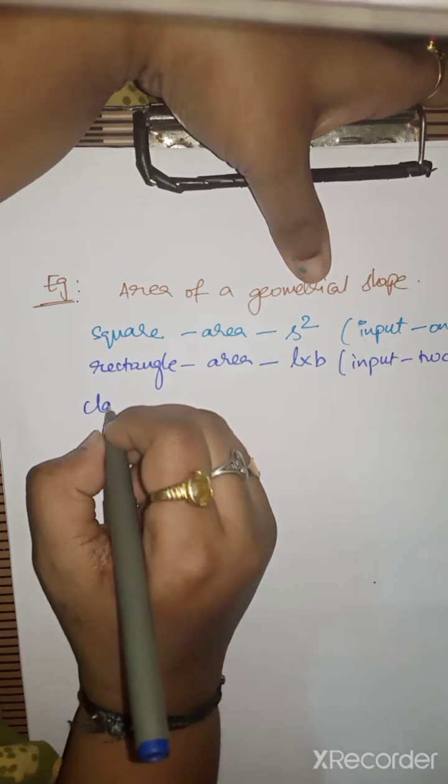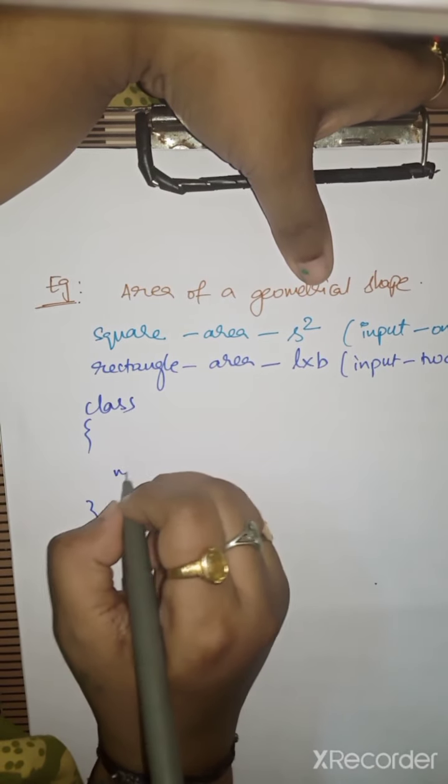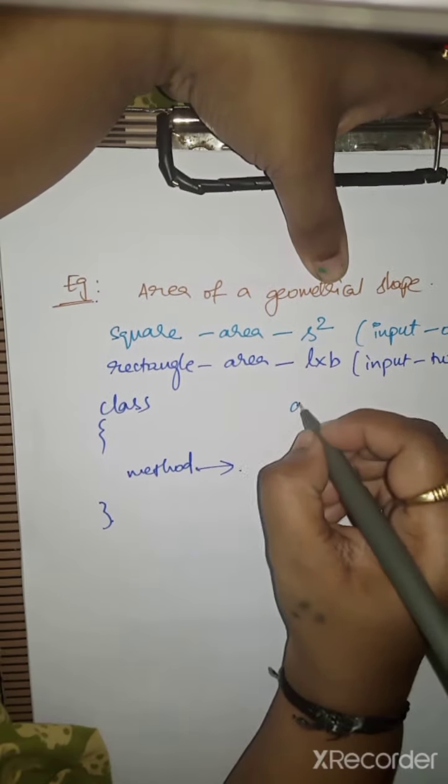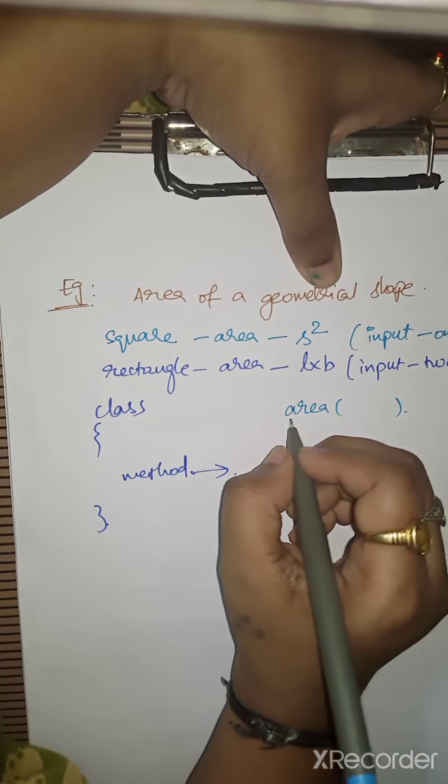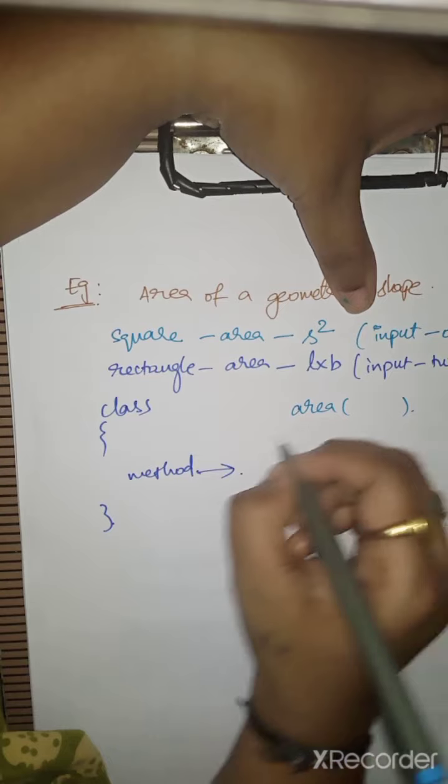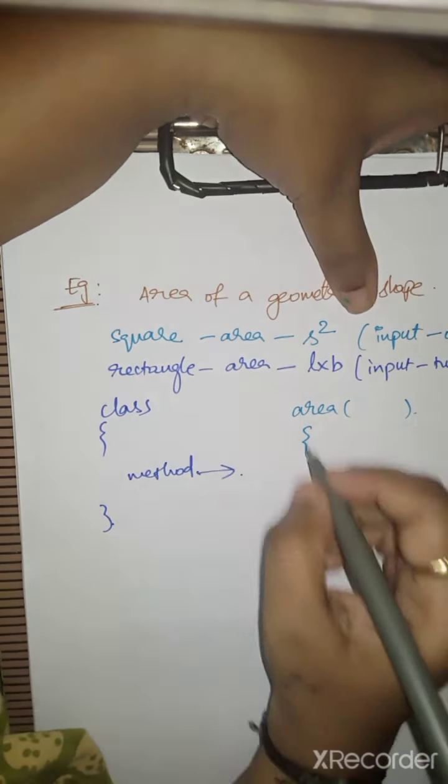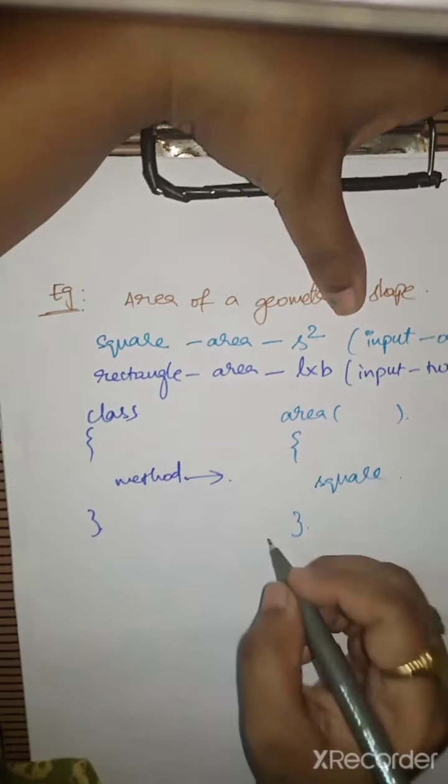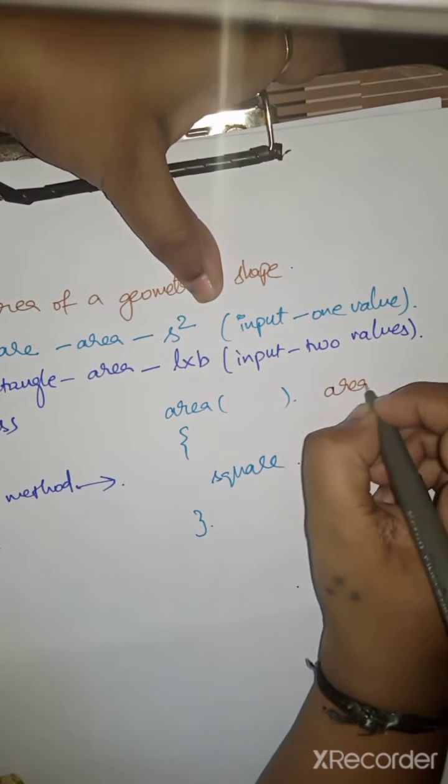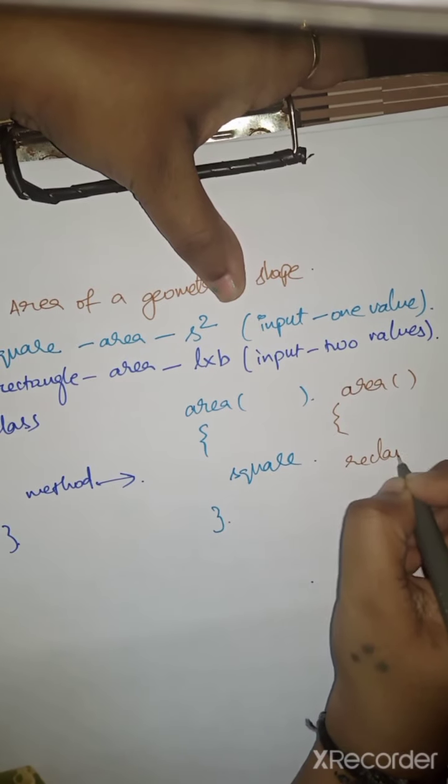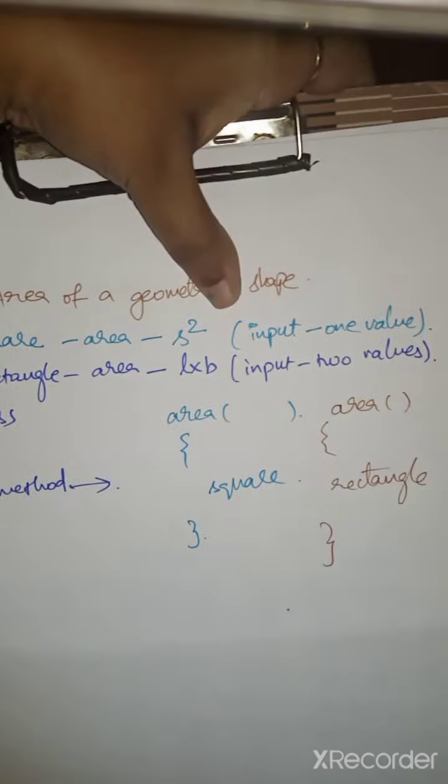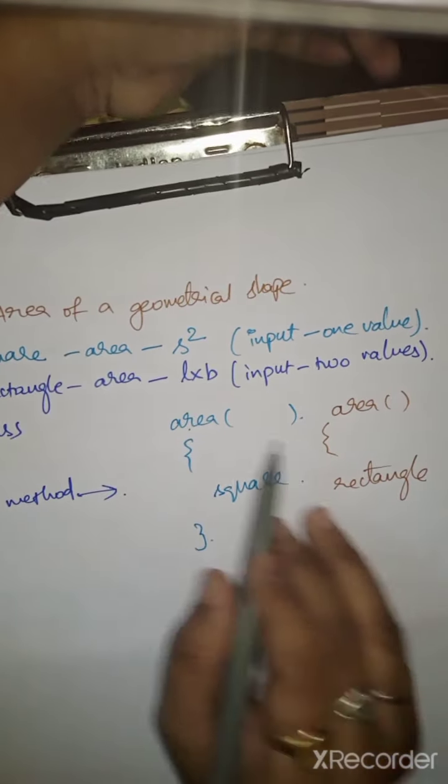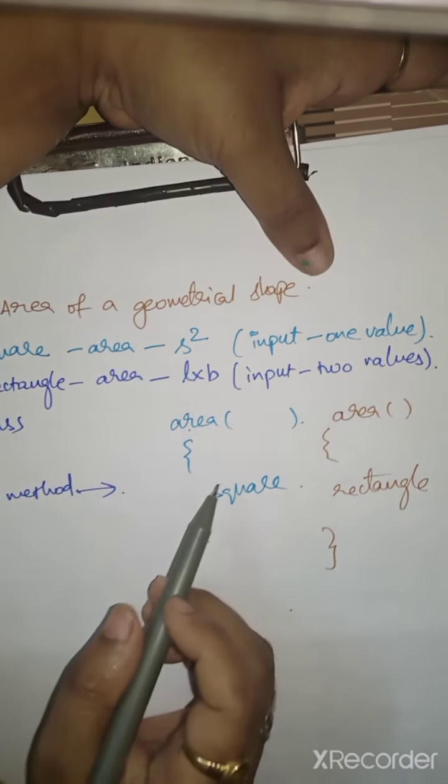We're going to write a class with a method named area that returns the calculated area. This is defined for square. Then you write another method area for rectangle that returns the rectangle's area. Both method names are the same - how can the compiler know which method to call for square and which for rectangle?